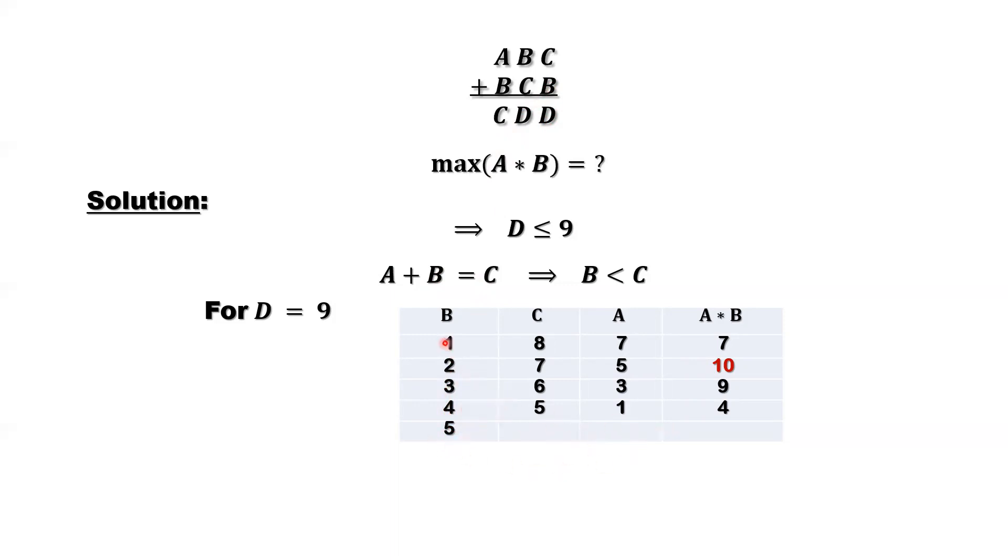So if B equals 1, B equals 1, and D equals 9. B equals 1, D equals 9. So one number plus B equals 9. That should be 8. Sorry, it should be 8. So 8 plus 1 is 9.